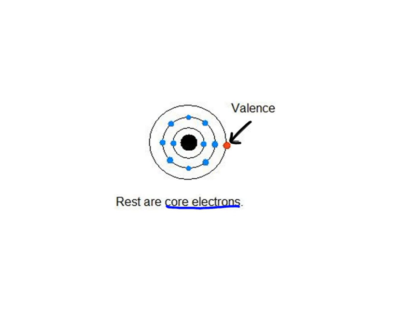All the blue dots are your core electrons, and the red one is your valence electron. The attractive forces between the electrons that are closer — these core electrons are closer to the nucleus, so they're really attracted to the nucleus. This outer electron is also being attracted to the nucleus, but we have a little competition going on.